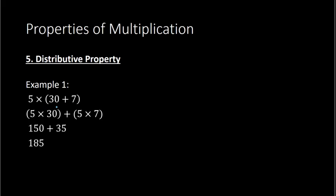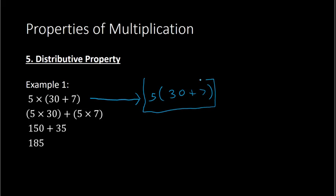Remember, though, that multiplication does not require the times sign. How I could write this instead would be 5 and then just the parentheses: 5(30 + 7). Because the number in front of or next to the parentheses means multiplication. So these two expressions are the same, just written in different ways. As you progress in math, we will typically use this notation and begin to not use the times sign very often.